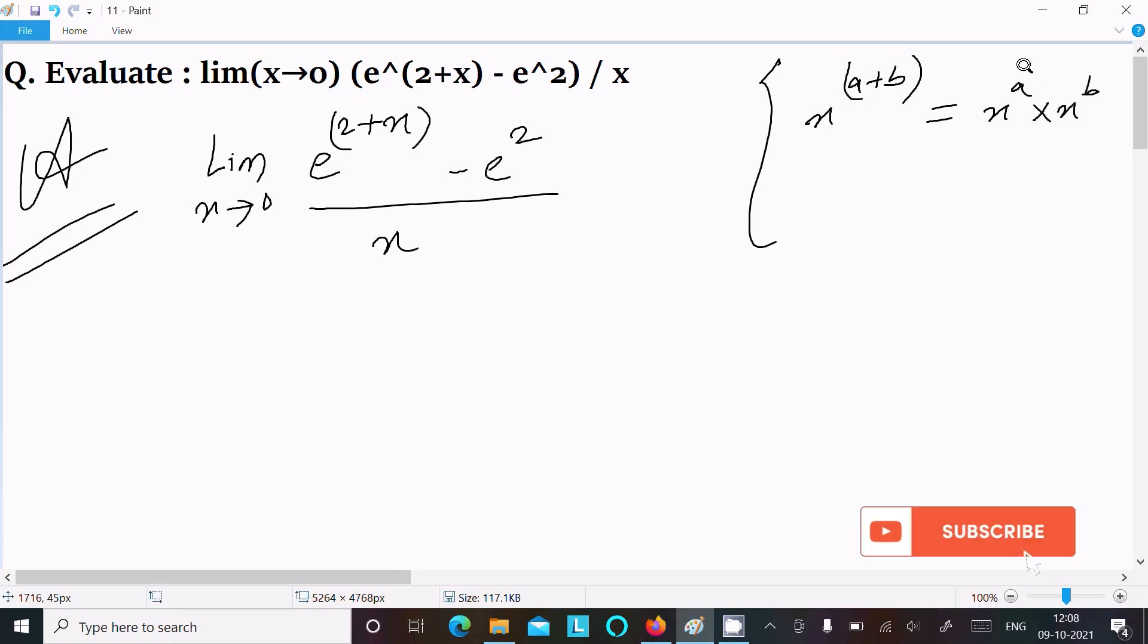So writing here: limit as x tends to 0 of e^2 times e^x minus e^2, all divided by x.